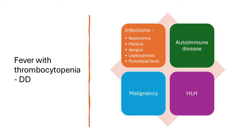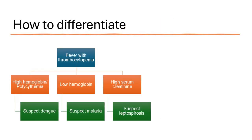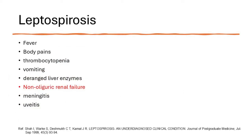Other diseases presenting with fever, thrombocytopenia, and hepatomegaly include autoimmune diseases, malignancies, and HLH. Looking at the commonest infections — malaria, dengue, and leptospirosis — how would you differentiate? Check the hemoglobin and PCV. If there is hemoconcentration, think dengue; if there's anemia, think malaria; if creatinine is high, think leptospirosis. We'll discuss why creatinine is high in leptospirosis shortly.